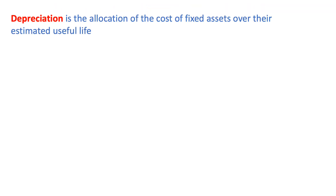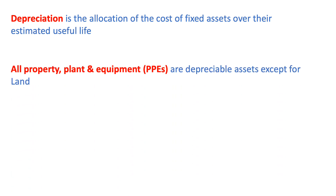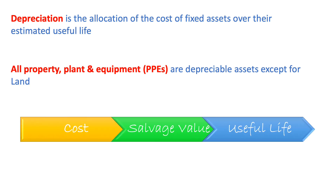Depreciation is the allocation of the cost of a fixed asset over its estimated useful life. All property, plant, and equipment are depreciable assets except for land. Land is the only asset that we cannot depreciate.